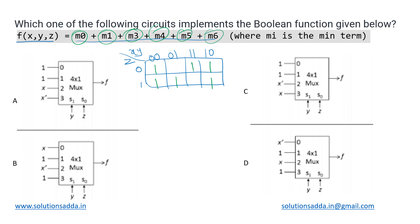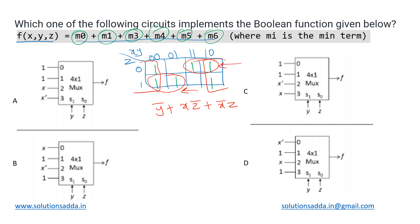Continuing: m4 is one-zero-zero, m5 is one-zero-one, and m6 is one-one-zero. These are all the cells filled using the minterms. We can combine four of them into a size-four group, giving us y̅. The remaining two ones give us the terms xz̅ and x̅z respectively. So the expression we are looking for is y̅ + xz̅ + x̅z.